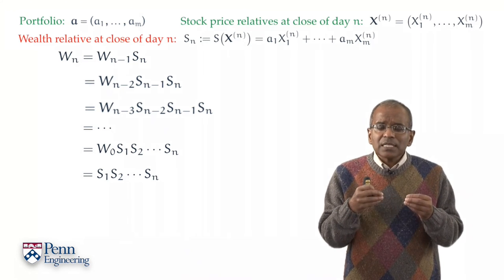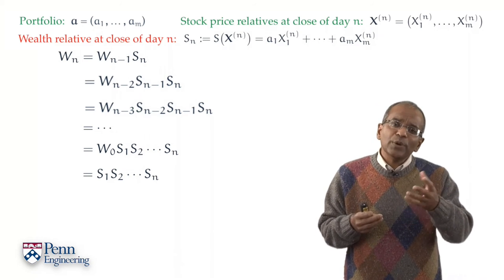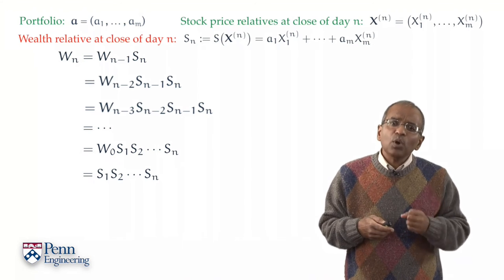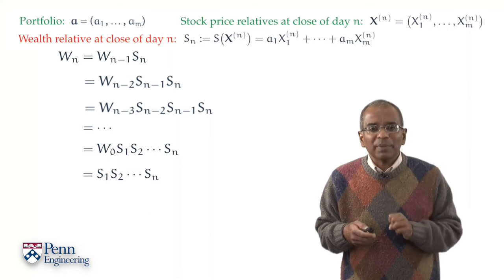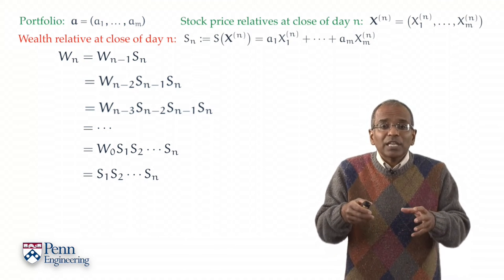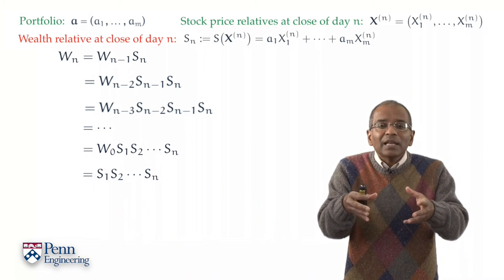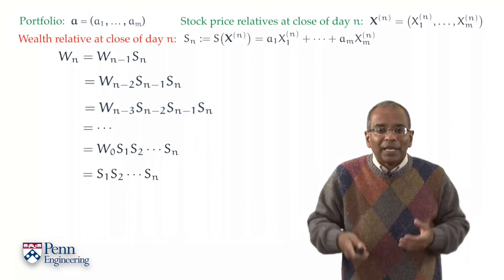That leaves us one more question. The logarithm could be to any base whatsoever. What is a reasonable base? Well, we shall choose 2 as the base for the logarithm, because as we shall see shortly, it's going to give us a very clean and intuitive description of what is happening to wealth.